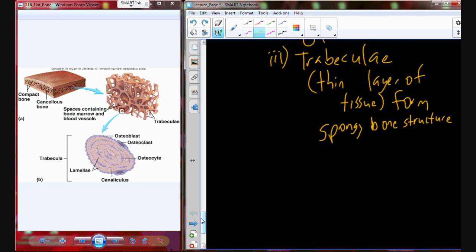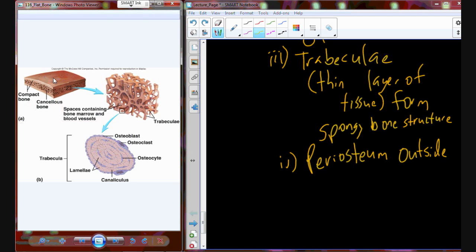Here as well, just like with our long bone, we're going to have periosteum on the outside along the outer surface of the compact bone, and then along the inner surface we're going to have endosteum.